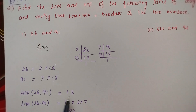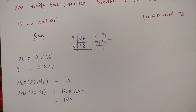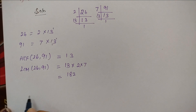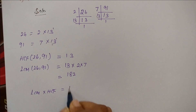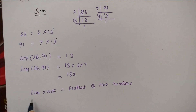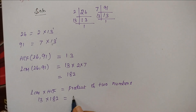HCF is the common factor with the lowest power, which is 13. LCM is the common factor with the highest power multiplied by remaining factors. Now we verify: LCM into HCF equals the product of the numbers. So LCM of 26 and 91 is 182, HCF is 13, and the product of numbers is 26 into 91.